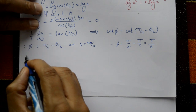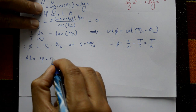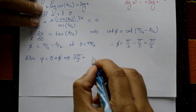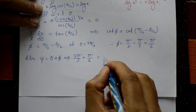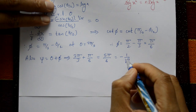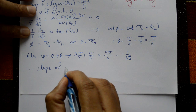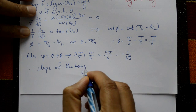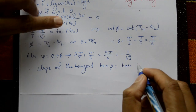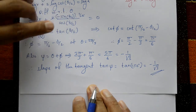With θ = 2π/3 and φ = π/6, angle ψ = θ + φ = 2π/3 + π/6 = 5π/6. Therefore slope of the tangent = tan ψ = tan(5π/6) = −1/√3. This is the required solution.